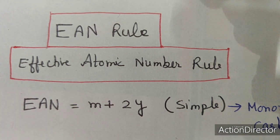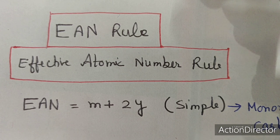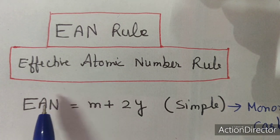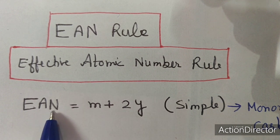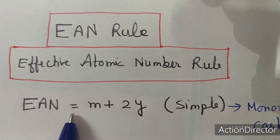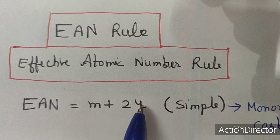If we use a mononuclear carbonyl, we will use a different formula to solve it. And if we use a dinuclear or polynuclear carbonyl, we can calculate it with a different formula. For mononuclear carbonyl complex, EAN is equal to M plus 2Y.